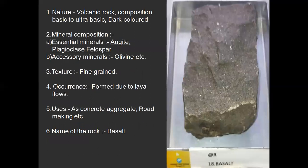Next, basalt. It is a volcanic rock — formed above the earth's crust. Composition is basic to ultra-basic, dark in color. Essential minerals are augite and plagioclase feldspar; accessory mineral is olivine. Texture is fine grain. It is formed due to lava flows. It is used as concrete aggregate — that is, in concrete mixing along with sand and cement — and in road making.